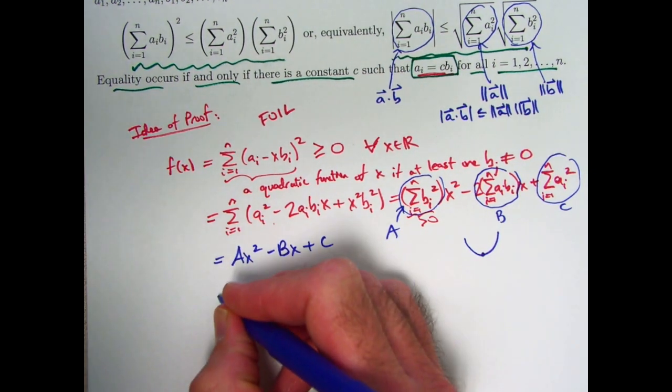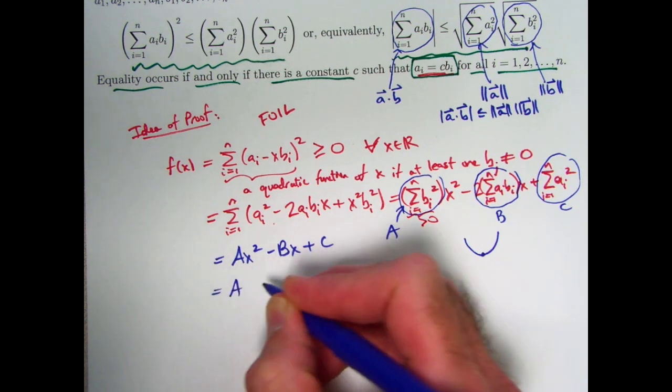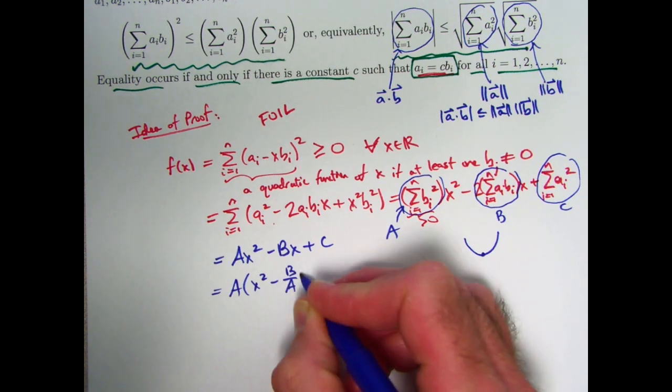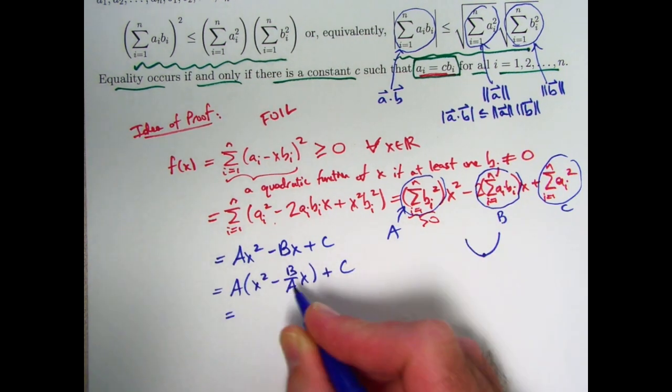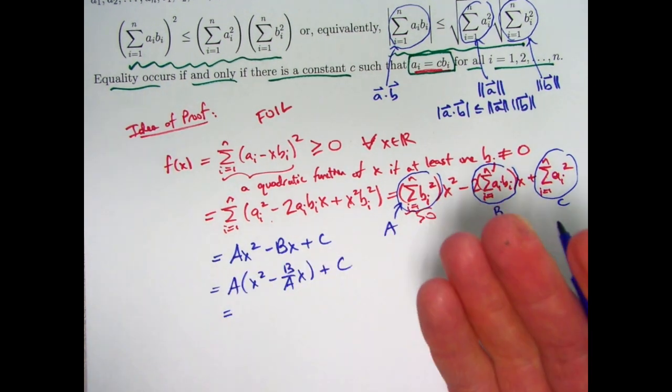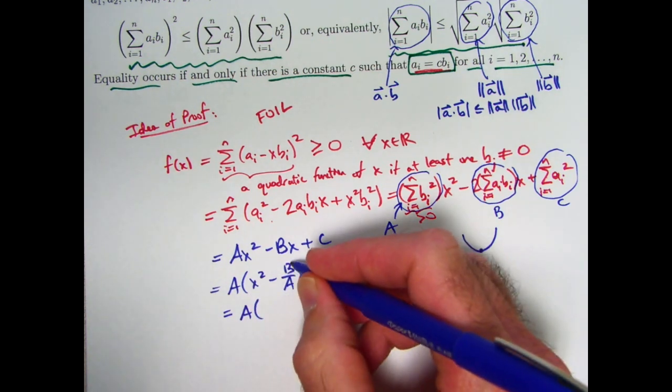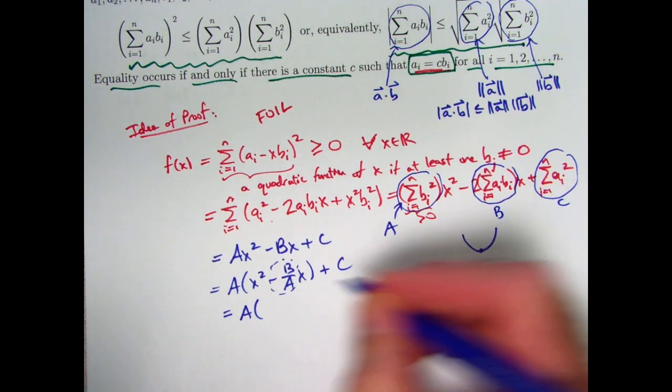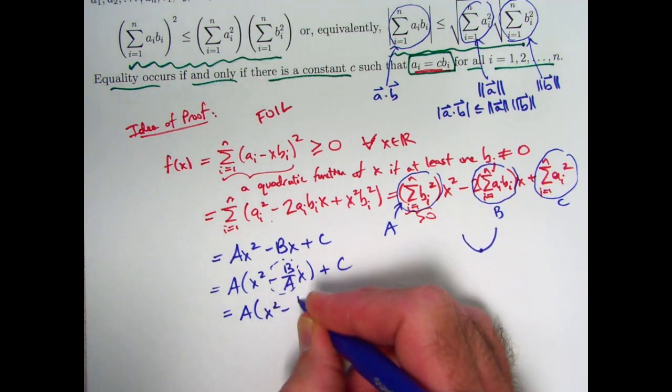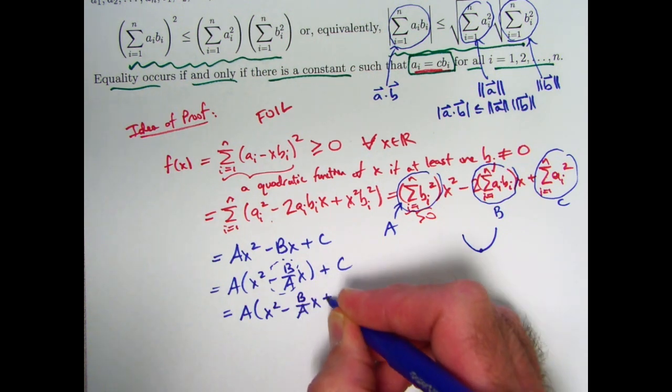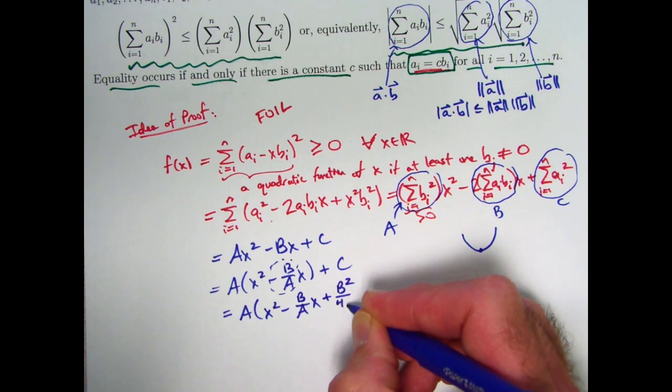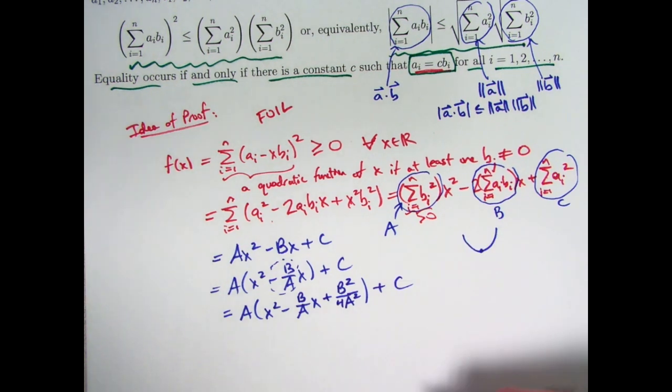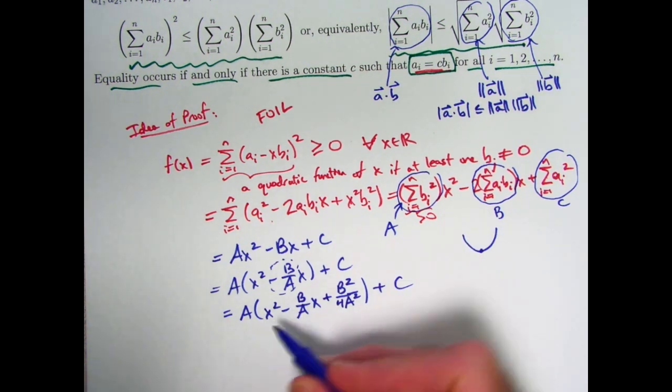You can—I think it's best maybe to factor out an A out of the first two terms like this—and then you'd like what's here to be a perfect square. It's not a perfect square at the moment. How can you make it be? The trick is to take the coefficient of x, negative B over A, divide it by two and square it, and then just put it in there. Now that should seem wrong. How can you just put it in there?